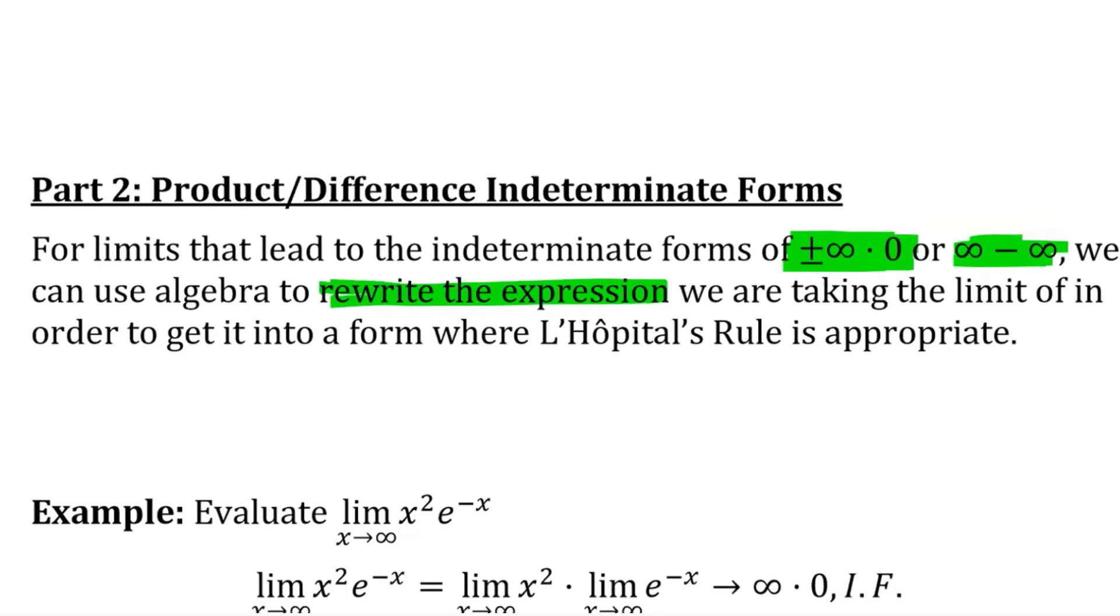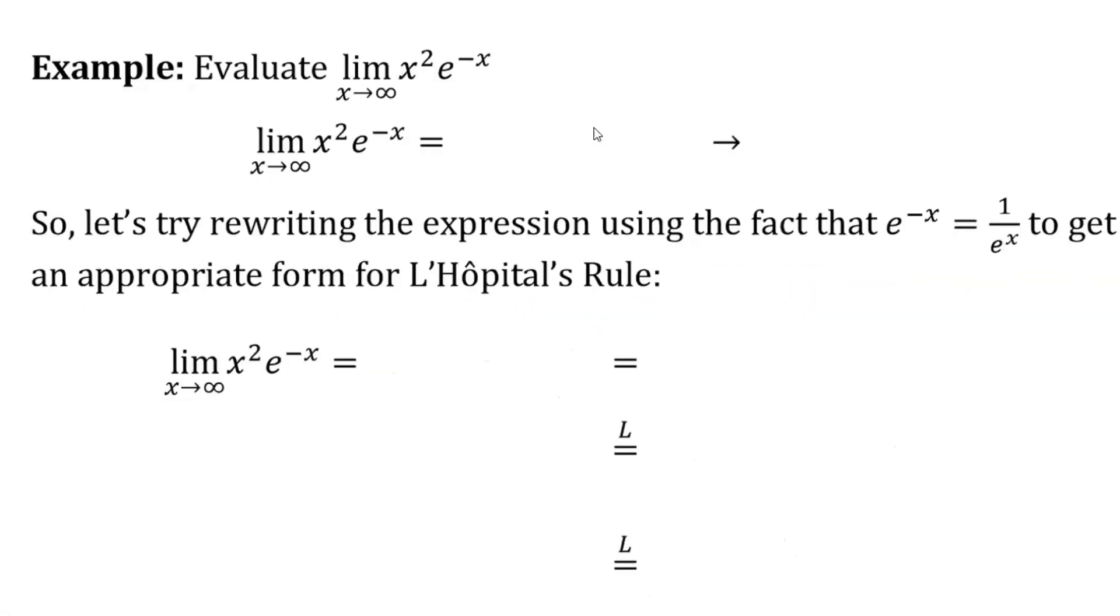So if we're asked to evaluate the limit as x approaches infinity of x squared times e to the negative x, then the first thing we would think about is what's going to happen to each part of this product? Because if they both turned out to be infinity, for example, then infinity times infinity is infinity, we'd be done, right?